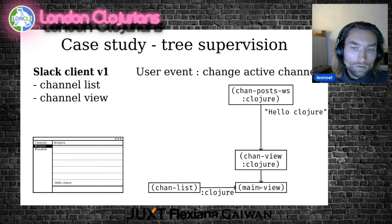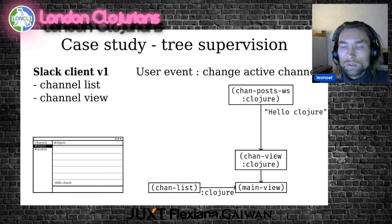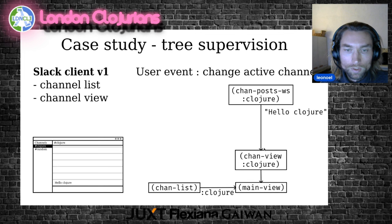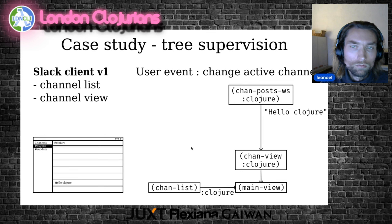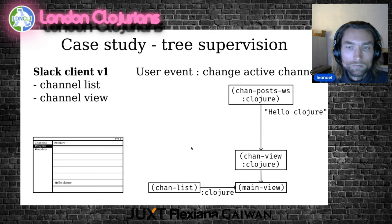At the top of the supervision tree, we have the main view, which has two children: the channel list and the channel view for the current channel. The channel view is dependent on another resource, which is the WebSocket in charge of pushing the posts for this channel for rendering. Now we want to see what happens when the user asks for another channel — they select the random channel. In this case, what we want to do is dispose the current channel view.